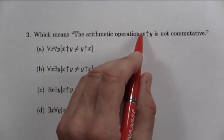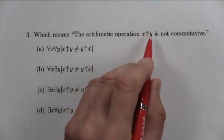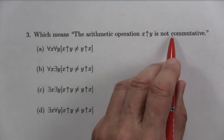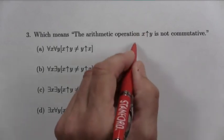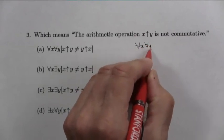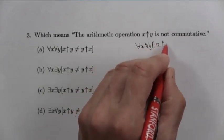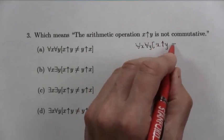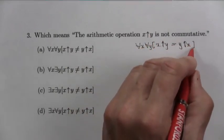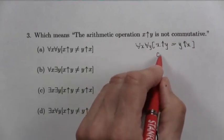It could be addition, multiplication, who knows? There's just some operation. We're simply trying to capture the fact that it's not commutative. Well, to show that it is commutative, you would have for all x, for all y, x↑y equals y↑x. That would say that it is commutative.